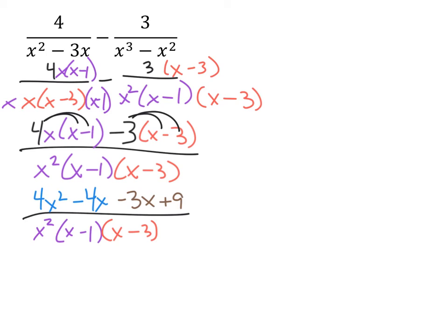And from here we're just going to combine like terms, and once we take that negative 4x and subtract 3x, we just have a negative 7x.